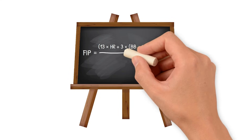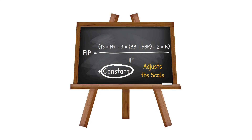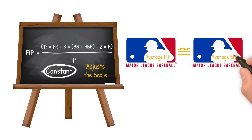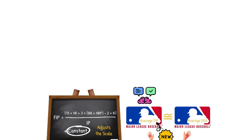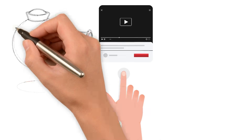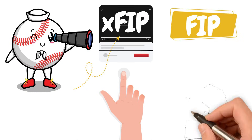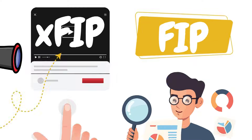Here's the formula. The last part — the constant — adjusts the output of FIP to scale so that League Average FIP aligns with League Average ERA, to make it easier for people who are new to FIP to understand. This video will be more focused around XFIP and how you can use these two stats in conjunction to better analyze pitchers. But if you'd like a full deep dive on FIP, check out our video on that stat linked below.